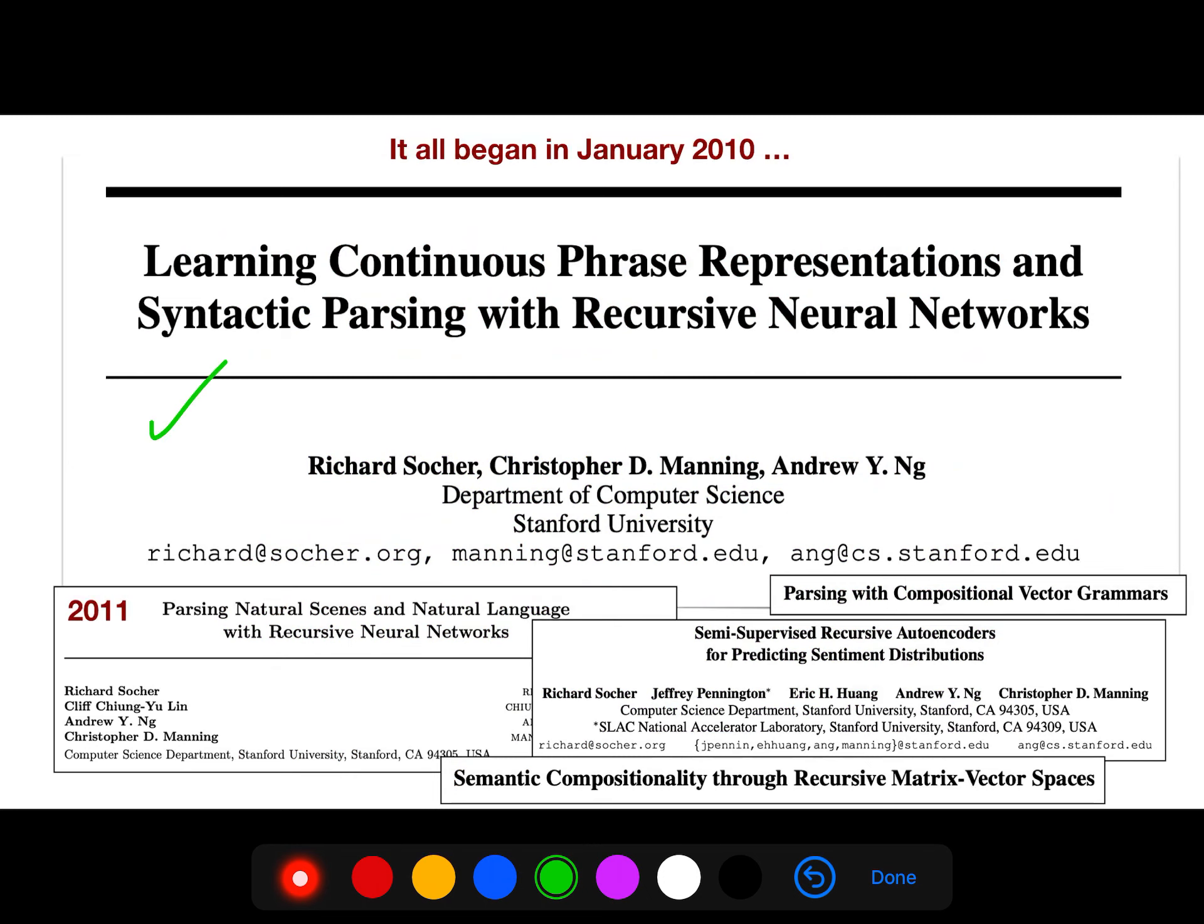So in 2010, this great researcher Christopher Manning and his friends, Andrew Y. Ng and Richard Socher, they created this syntactic parsing. For the syntactic parsing problem, they created these recursive neural networks. And later in 2011, they used it for natural scenes as well. And here, they used it for compositional vector grammars.